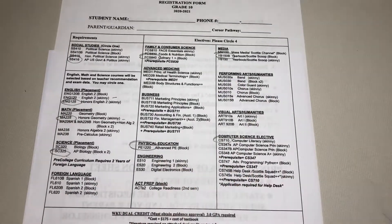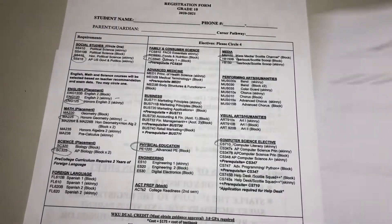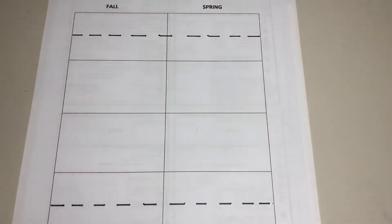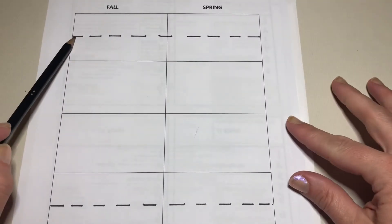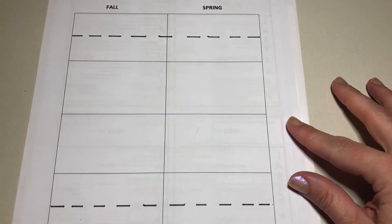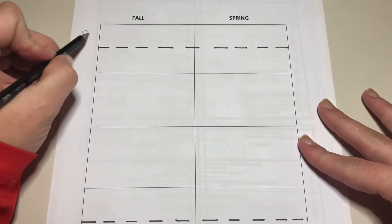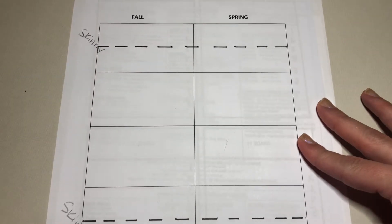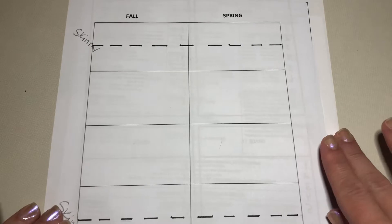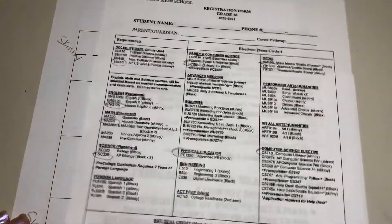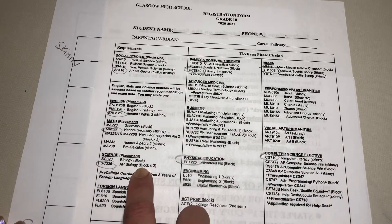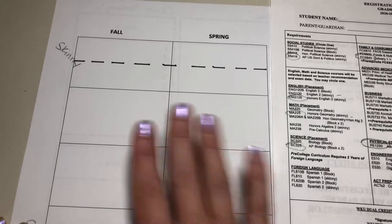Once you have your classes selected, you can use a sheet — you can make your own sheet like this — and this is a great way to lay out your year so you can see everything. You're going to notice that there are dotted lines at the top and the bottom, because at Glasgow High School you have the option to have skinnies in the morning and again in the afternoon. As you fill out your schedule, you're simply going to look if your class is a skinny or if it's a block, and then fill those in on this makeshift schedule.